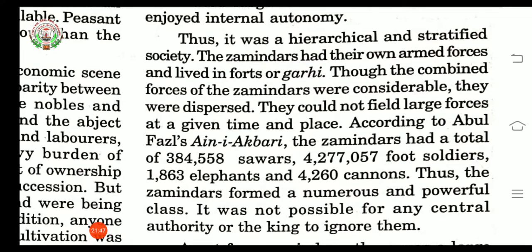Abul Fazal, the author of Akbarnama, also wrote the Ain-i-Akbari. In this work, he had recorded the number of zamindars, sawars, foot soldiers, elephants and cannons. Cannons means large guns on a ship or army vehicle. So Abul Fazal recorded details about all these items belonging to the zamindars.